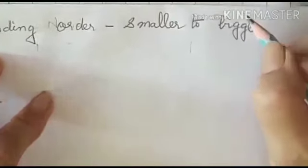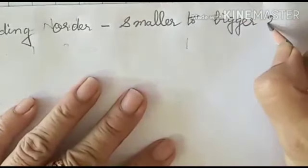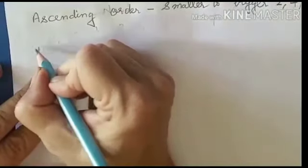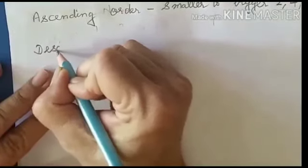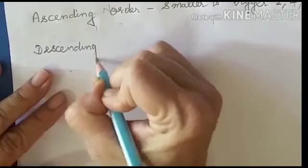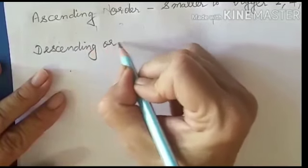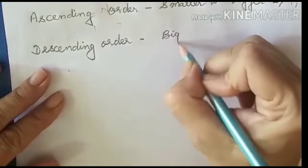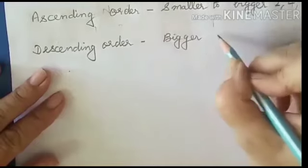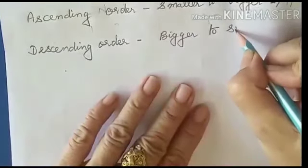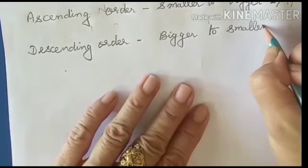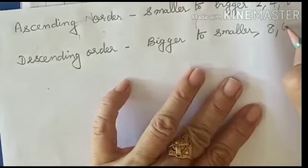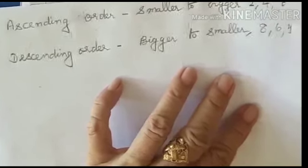You can take any number — just like 2, 4, and 6. The same way, descending order means bigger to smaller. You can take 8, 6, 4, 2.